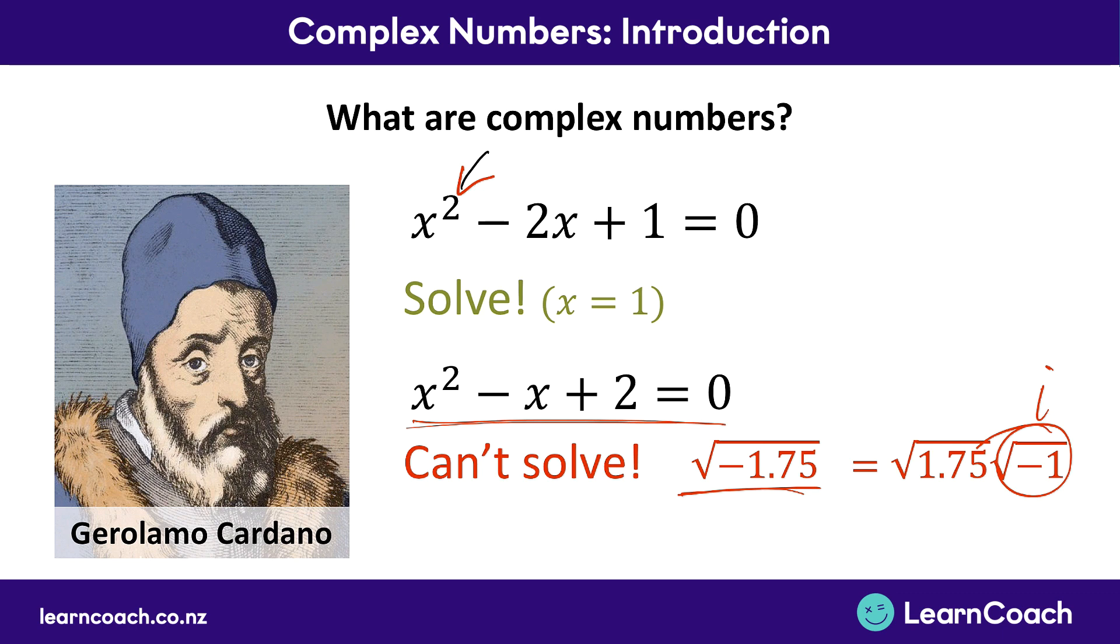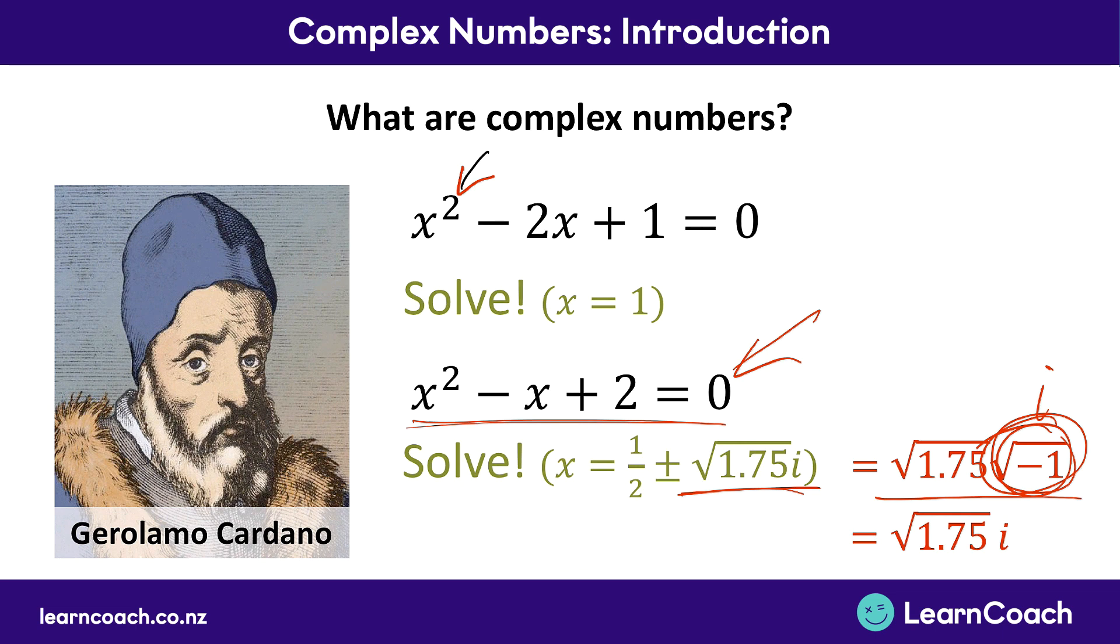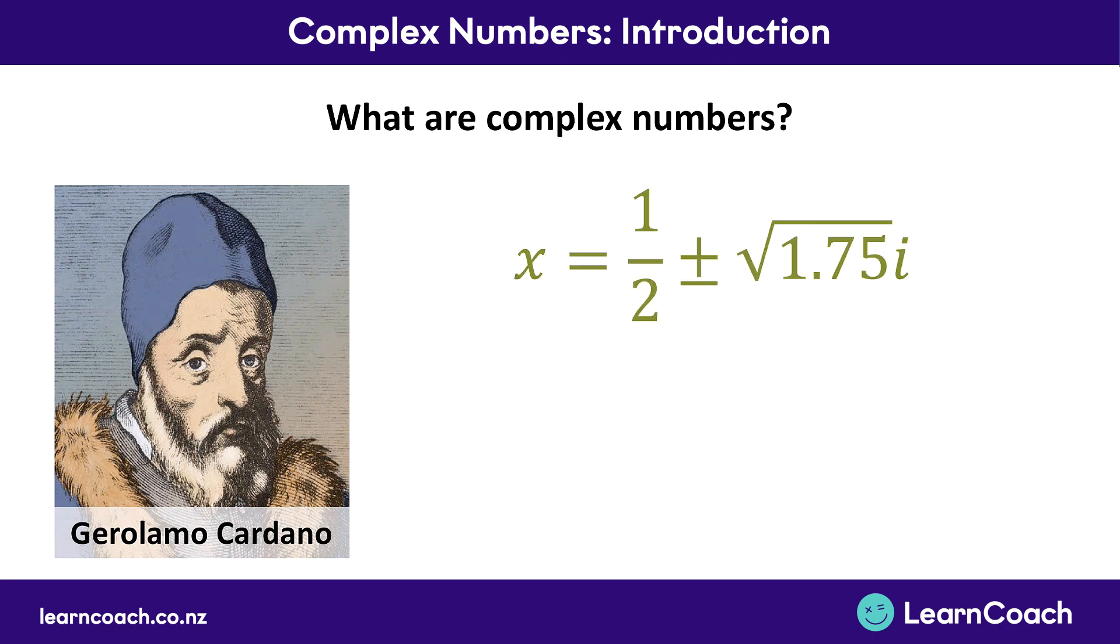We'll be able to solve anything. So in this case he decided to write out the square root of 1.75 multiplied by the square root of negative 1 is the same as saying the square root of 1.75 i, because i means the square root of negative 1. So this equation here we could now solve, and x would equal a half plus or minus the square root of 1.75 i. Now it doesn't look very pretty; in fact, it looks quite complex. However, it is a solution, and to understand what a complex number is, we're going to take a harder look at this answer here and what it's made up of.